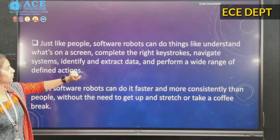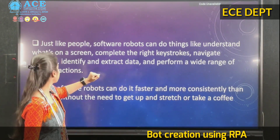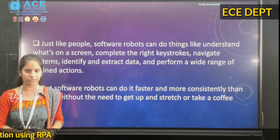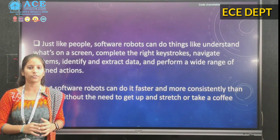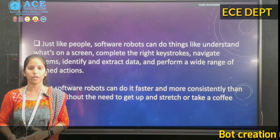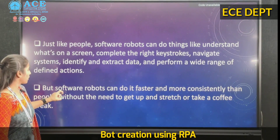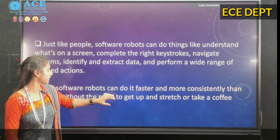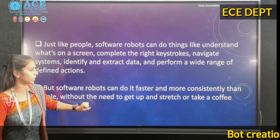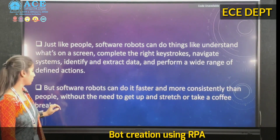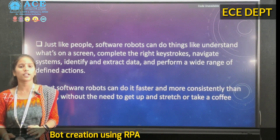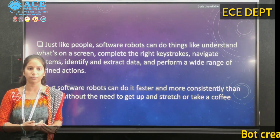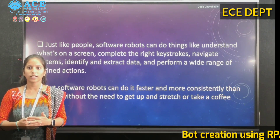Just like people, software robots can do things simply and can easily automate everything we perform. Software robots can do it faster and more consistently than people, without the need to get up and stretch or take a coffee break. These bots are more efficient than humans and work more consistently.